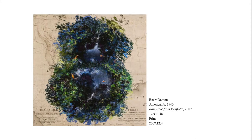This work by Betsy Damon also seems to have a rough, uneven texture, even though it is actually smooth. The artist uses small dots or blotches of color to show greenery, water, highlights, and shadows. This print uses a map as the background, and it looks as if you lean in far enough you could fall into the water.